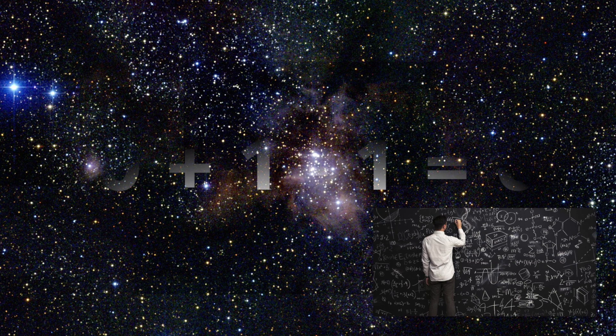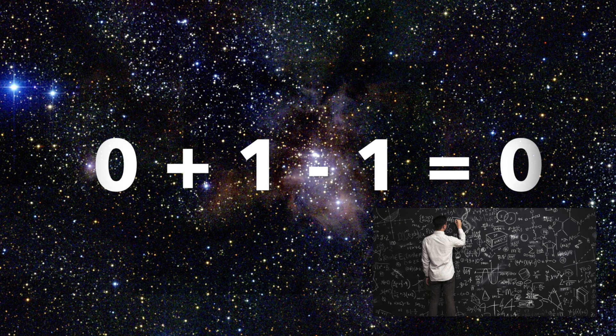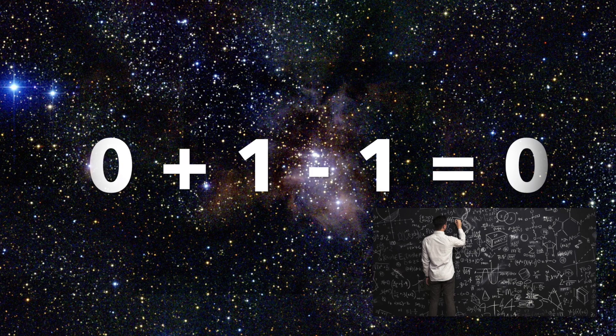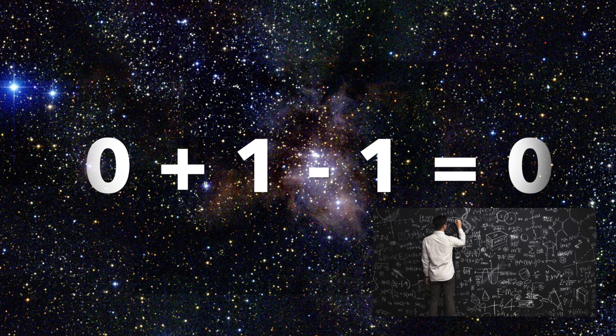Zero plus one minus one equals zero. And I'm dead serious. This is no joke. Zero plus one minus one equals zero.